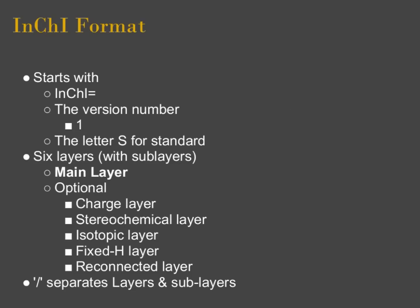To address some of the formatting, every InChI identifier starts with 'InChI=', then the version number. So far there's only been version 1, so it's always 'InChI=1', and then the letter S for standard. After that, you're going to have six layers. Layers are separated with slashes, and you're definitely going to have the main layer — that's a necessity. Then there are optional layers: the charged layer, stereochemical layer, isotopic layer, fixed hydrogen layer, and the reconnected layer. We're just going to talk about the main layer, which also has sub-layers within it separated by a slash.